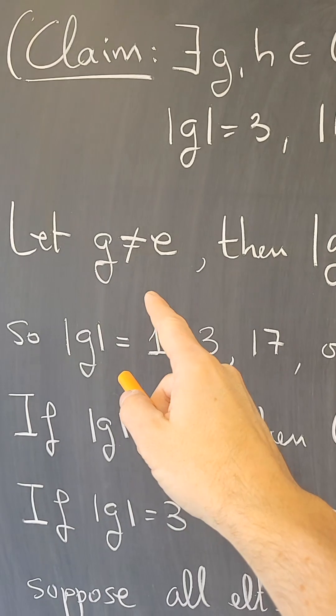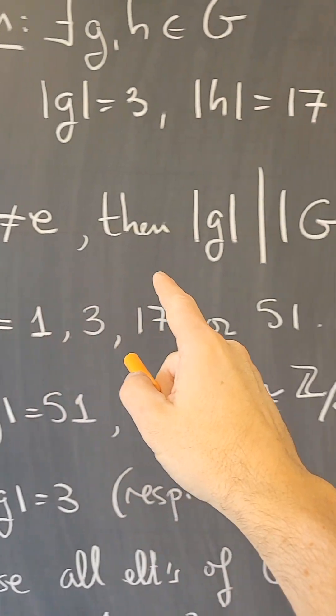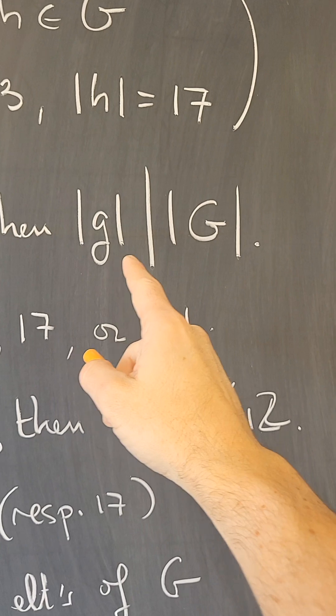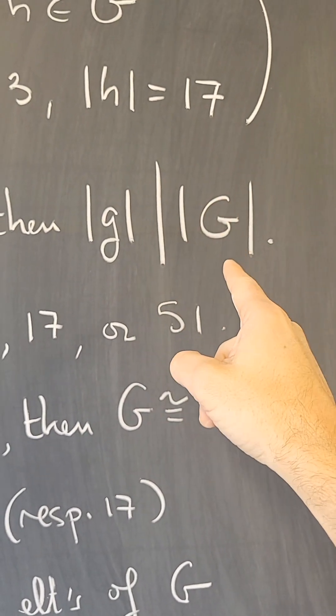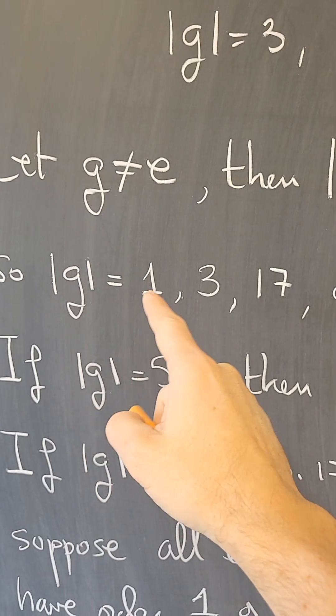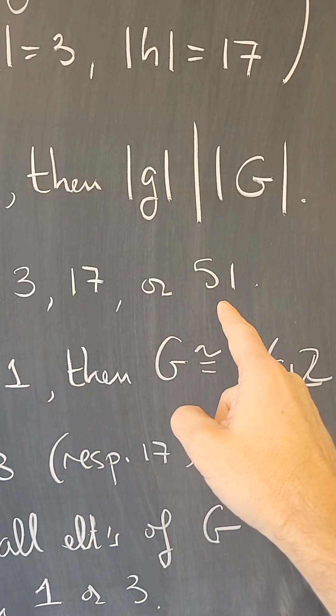So let g be an element that is not the identity. Then by Lagrange's theorem, the order of g divides the order of the group, which is 51. Therefore, the order of g has to be 1, 3, 17, or 51.